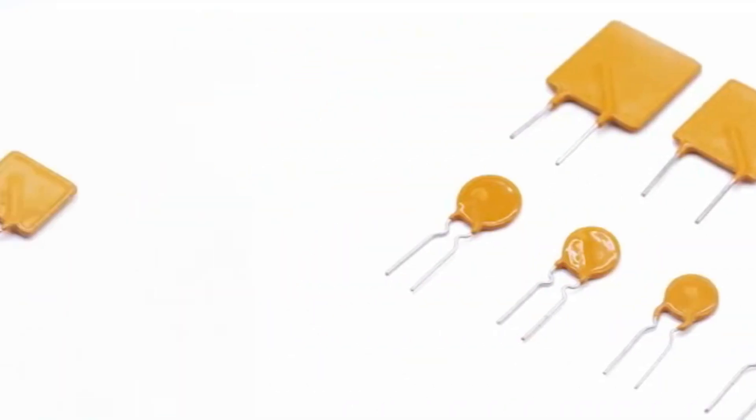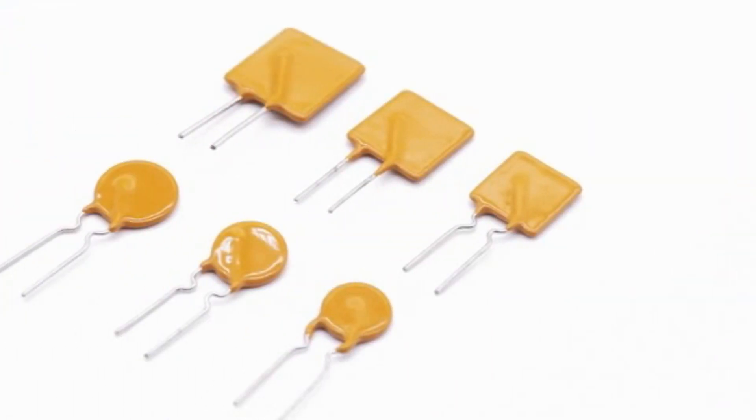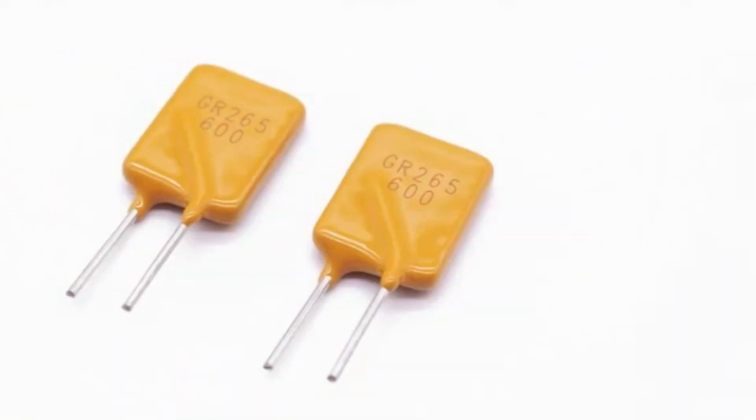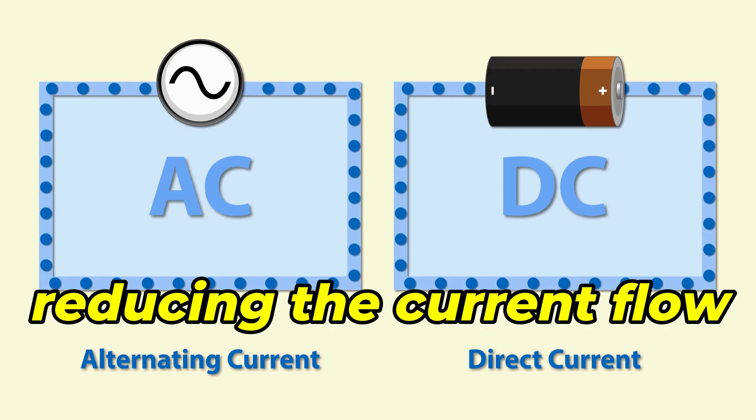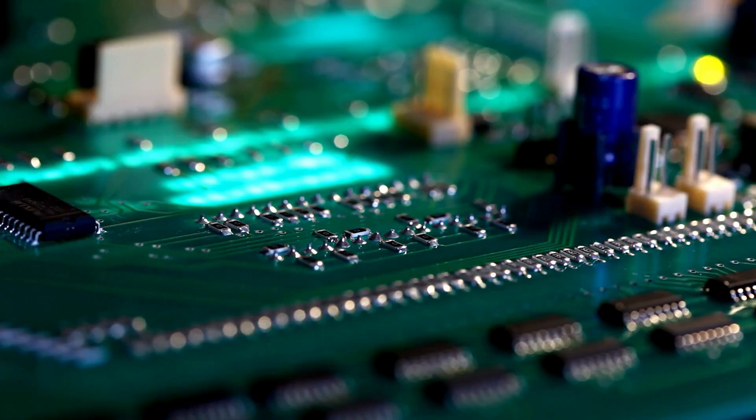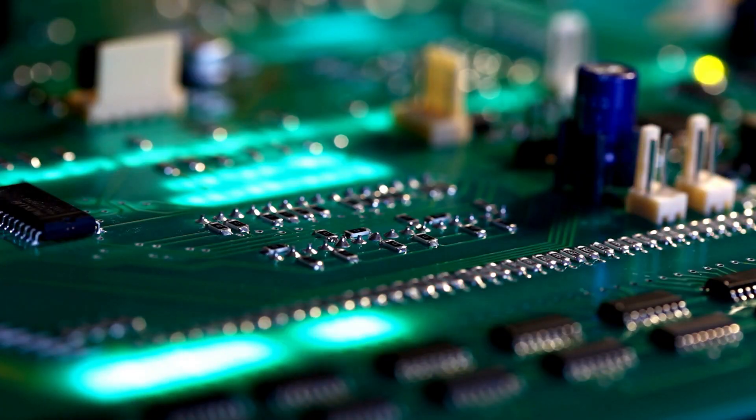PPTC fuses are resettable fuses that do not need to be replaced after tripping. They work by increasing their resistance when the current exceeds a certain level, reducing the current flow. Once the fault condition is cleared, the fuse cools down and resets, allowing current to flow normally again.